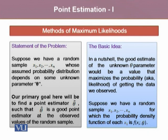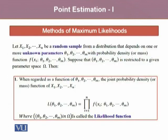Suppose we have a random sample of size n, x1 to xn, for which the probability density function for each xi is given as f with parameter theta. These are unknown parameters theta 1, theta 2, up to theta m, with a probability density function or probability mass function f dependent upon m parameters theta 1 through theta m. Suppose that theta 1 through theta m are restricted to a given parameter space omega; then the maximum likelihood procedure works stepwise.